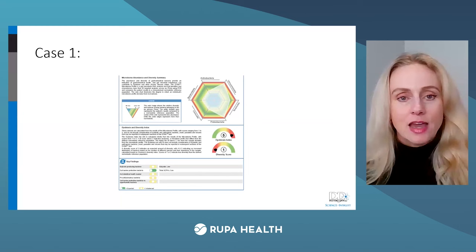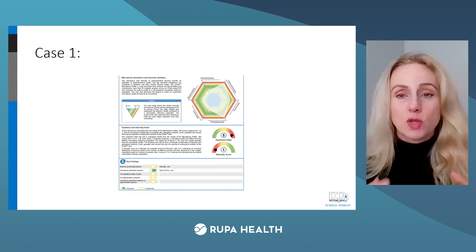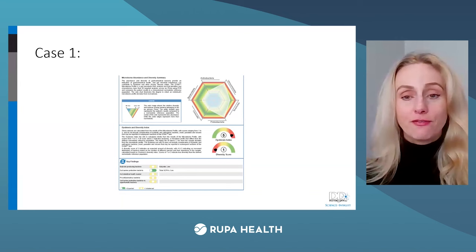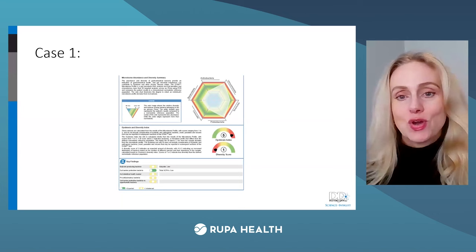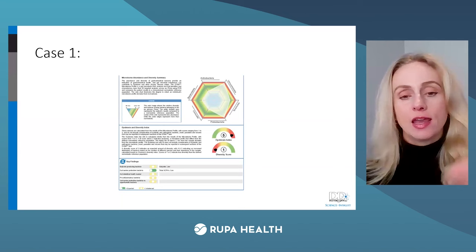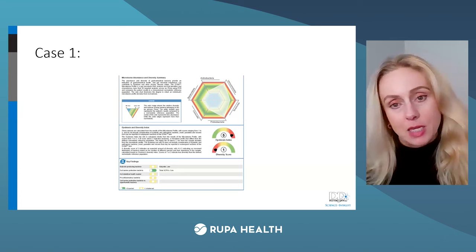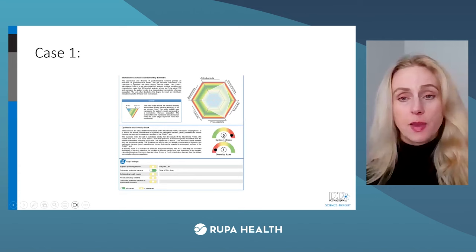The Firmicutes and Bacteroidetes are a little bit lower, without clear clinical pearls for those phyla, but I'm thinking about the diet. This first section — abundance and diversity — is really diet-driven, because the bacteria in her colon depend on the food we feed them as substrates for their energy source. People sometimes look at that first section and think, 'what can I kill?' What you can kill comes later in the report — that's the pathogens and the dysbiotic bacteria.